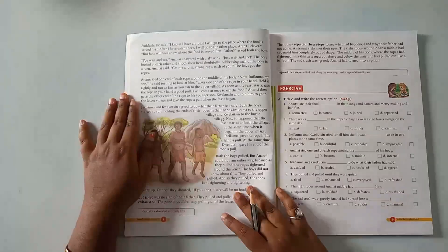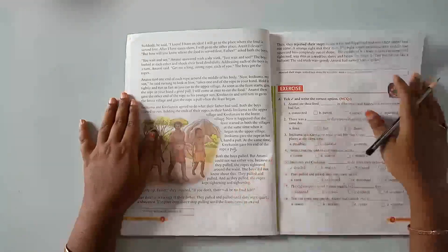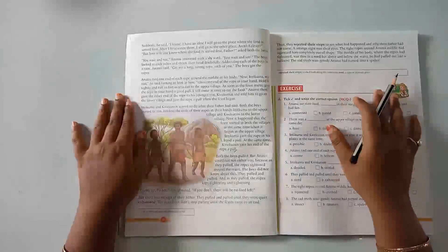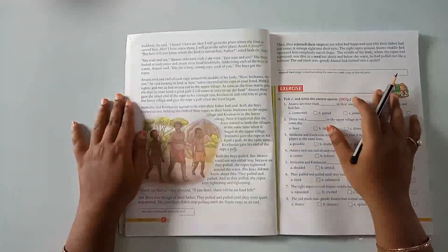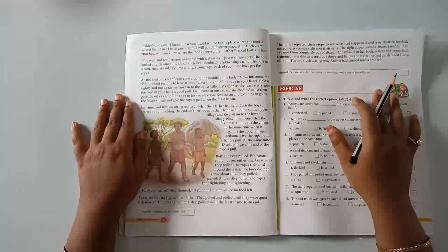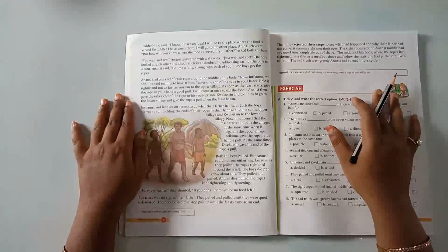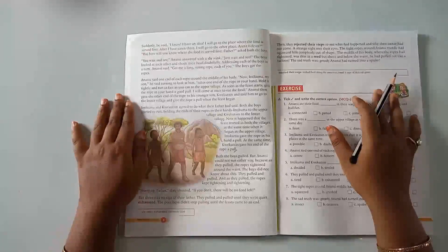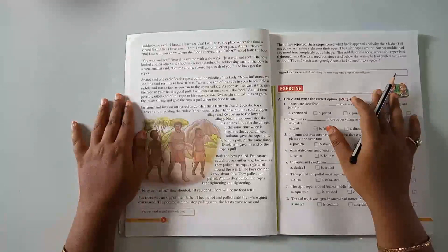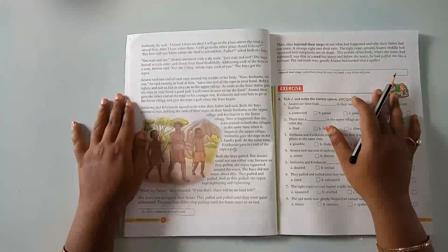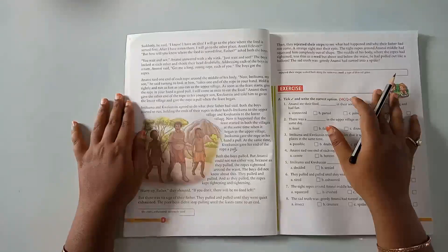Anansi said, Take one end of the rope in your hand, hold it tightly, and run as fast as you can to the upper village. As soon as the feast starts, give the rope in your hand a good pull. I will come at once to eat the food. Anansi then gave the other end of the rope to his younger son, Vikitsin, and told him to go to the lower village and give the rope a pull when the feast began. Intikuma and Vikitsin agreed to do what their father had said. Both the boys started to run, holding the ends of their ropes in their hands.